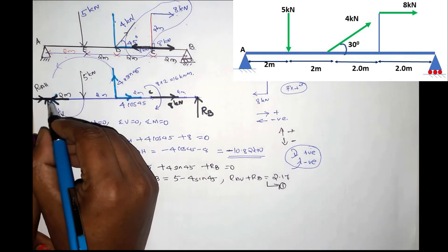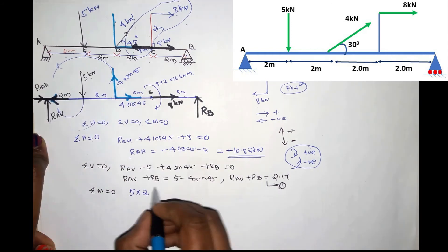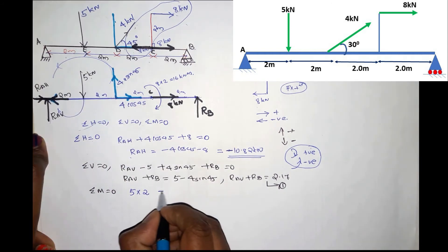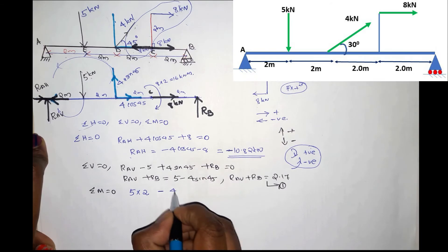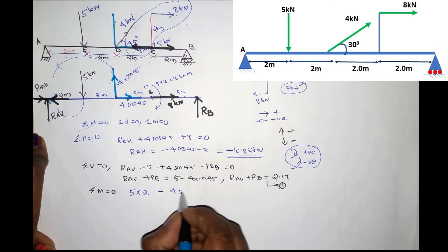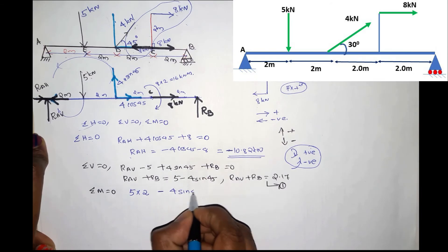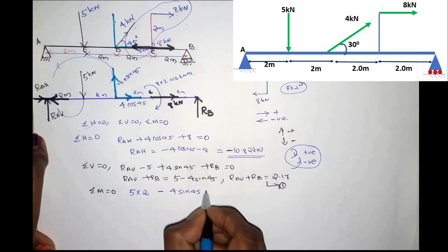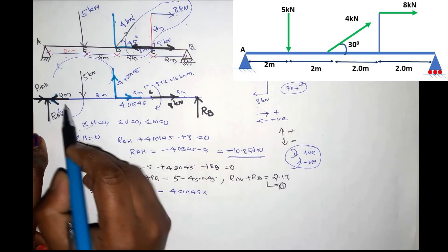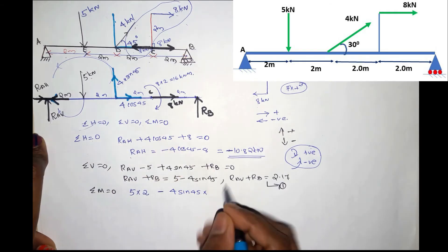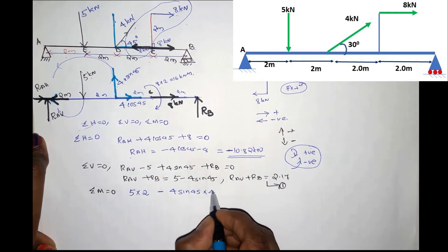So the moment contribution is minus 4sin45 into the distance. Two plus two is four, giving a distance of 4m for that term.